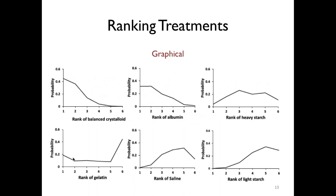The ranking can be presented in a graphic or numeric format. Here we have a graphic example. The graphic approaches involve examining the area under the curve, indicating the probability of each drug to occupy a specific rank. There are also other graphic formats such as forest plots or bar diagrams, among others. For this case, we are presenting rank programs.